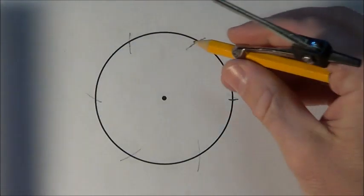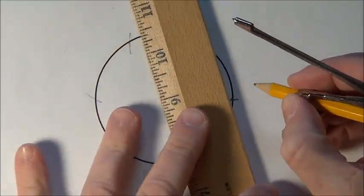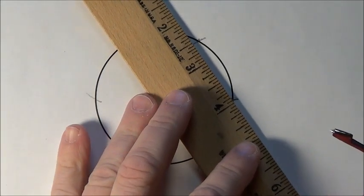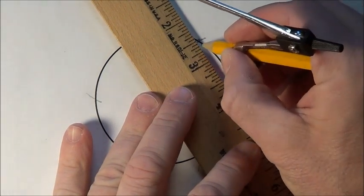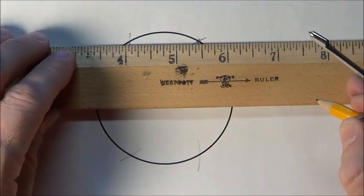And all we have to do is connect all these little dots. And once I connect them, we will have a regular hexagon inscribed inside the circle.